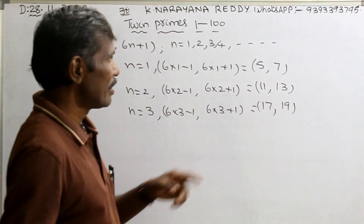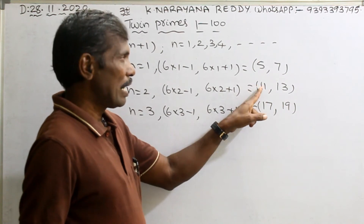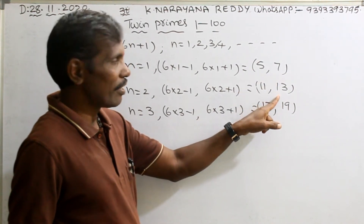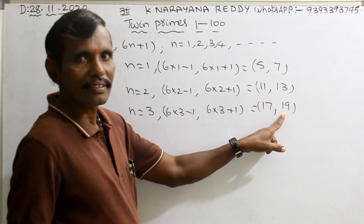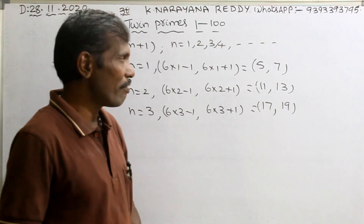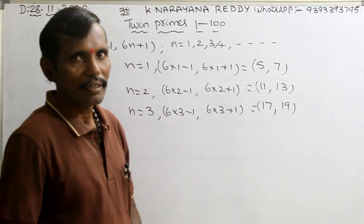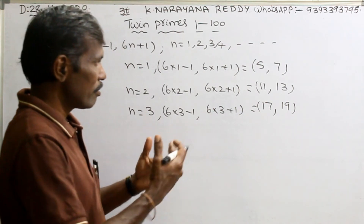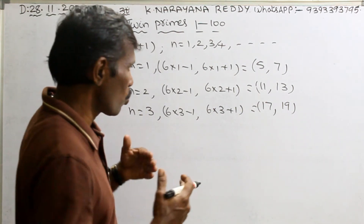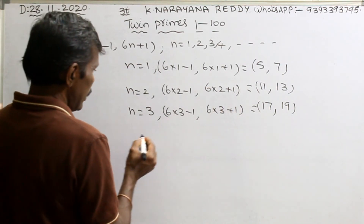In this way, we add 6 to each number to list all the twin prime pairs from 1 to 100. For example, after (17, 19), add 6 to get (23, 25). The difference between each pair is 2. Add 6 again to get (29, 31).